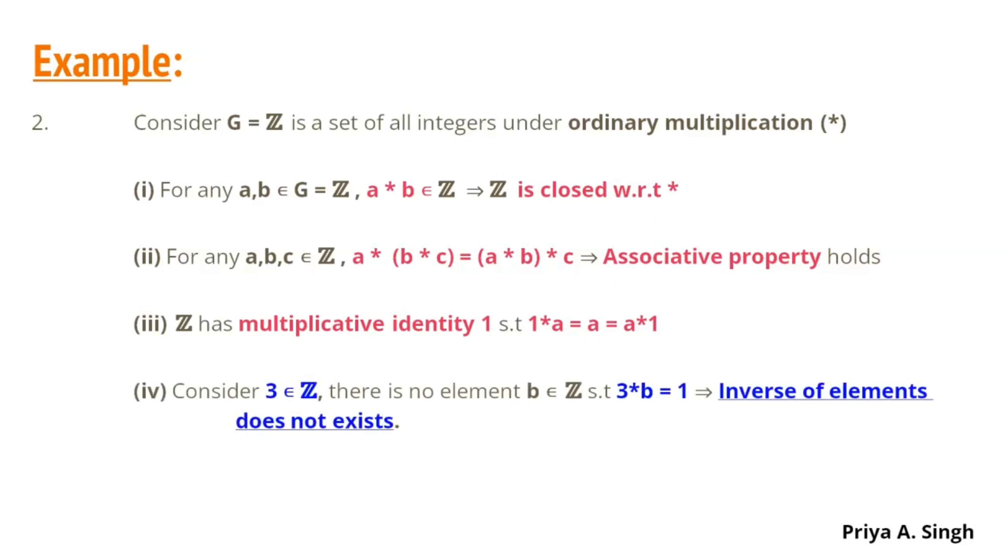But, if we consider an element say 3 in Z, then there is no such element in Z such that 3 when multiplied by that element B equals 1. Thus, we can say that inverse of elements does not exist in the set of integers. Therefore, Z is not a group with respect to multiplication operation.